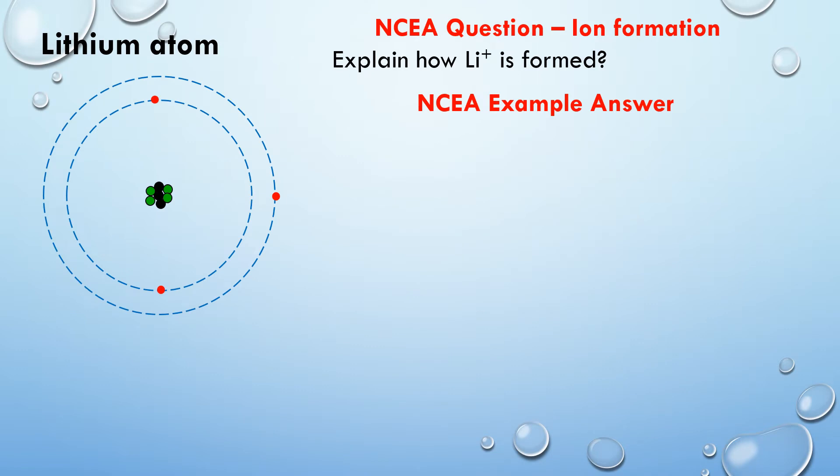Right, so let's look at the type of question they're going to give us in this NCEA paper. The first type of question that they usually give you is you have to explain how an ion is formed. For example, here they're going to ask: explain how the lithium ion is formed. Now they've given you the symbol of the lithium ion, Li+, to help you out. On the left here I've drawn a diagram of a lithium atom, just for us to reference as we go through and explain how the lithium ion is formed.